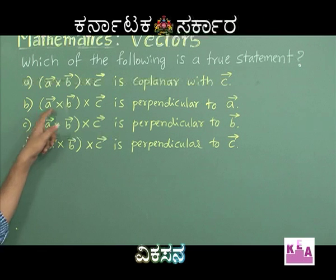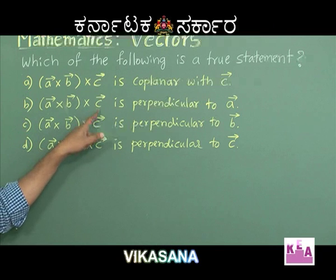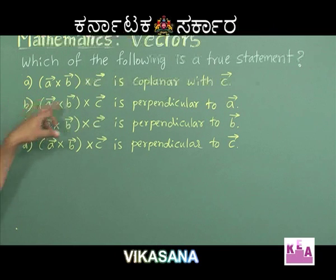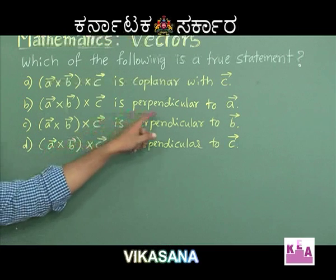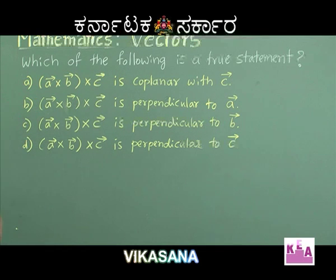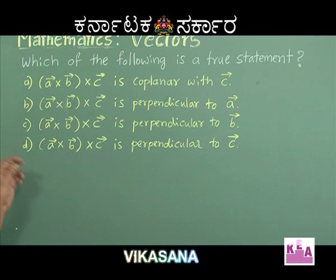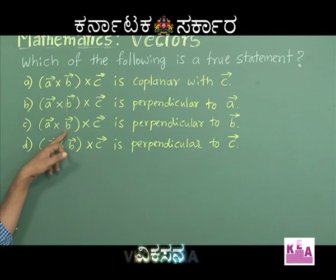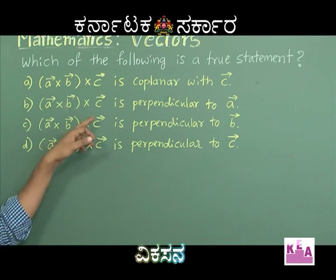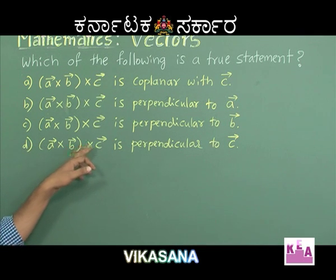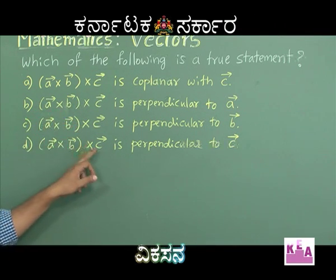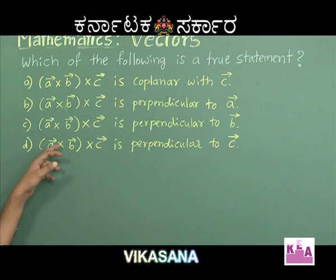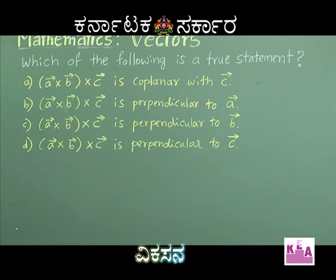Option B states it is perpendicular to vector A — incorrect, since it is perpendicular to A cross B and vector C, not vector A or vector B individually. In option D, vector A cross (B cross C) is perpendicular to vector C — this is the correct answer. The overall result vector is perpendicular to vector C.